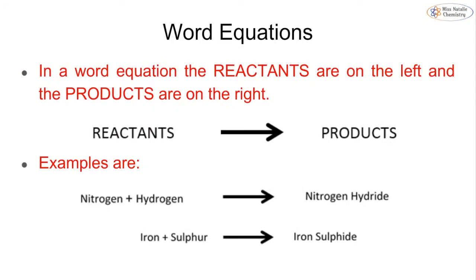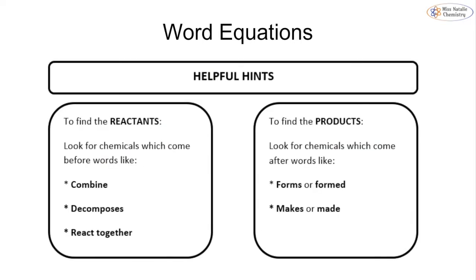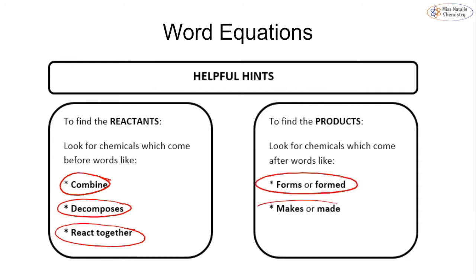We can display all of our substances in a word equation — there is a separate video on how to write word equations on this YouTube channel. In general, reactants go on the left-hand side, an arrow in the middle, and products on the right-hand side. Helpful hints: reactants are things that combine, decompose, or react together, and products are things that are formed or made.